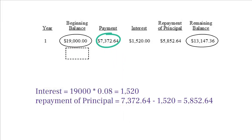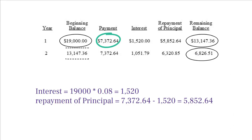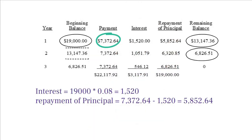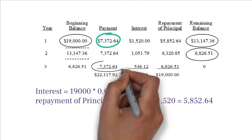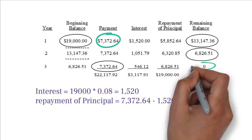You do the same calculation for the second year and end up with the loan balance of $6,826.51, which is going to be the beginning balance of the third and final year. In the third year, I make another payment of $7,372.64, of which $546.12 is the interest amount and the remaining amount was used to pay off the loan. As you can see, by the end of the third year, your loan balance has become zero.